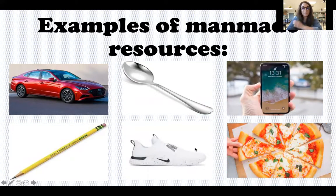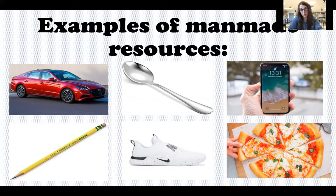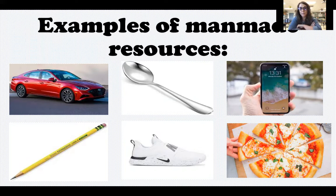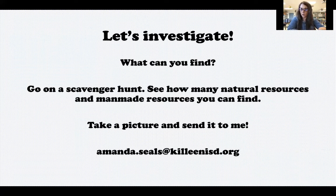Now we have to be careful when talking about food. You cannot just say 'food,' because some food is natural. Fruits and vegetables grow on plants and trees, so those are considered natural resources — like an apple, a strawberry, or a cucumber. But things that people make, like pizza — you can't just grow and pick a pizza off a tree — that would be man-made. Make sure when you're distinguishing, you're more specific than just saying 'food.'